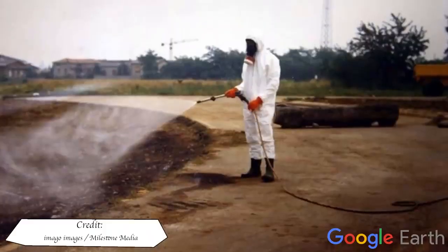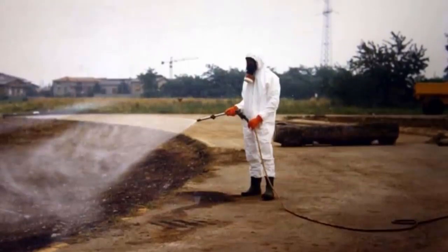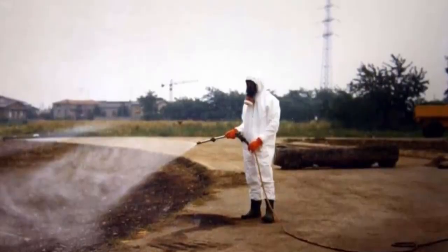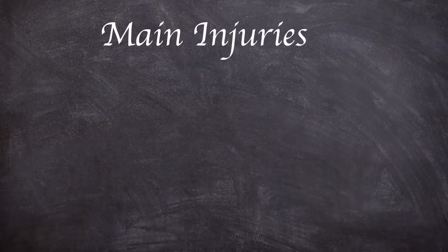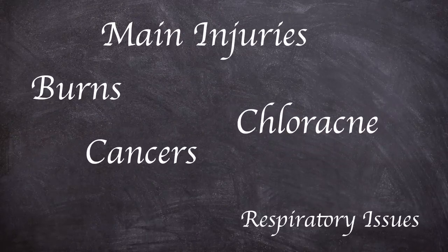Around 2000 hectares of soil was contaminated and over 80,000 animals died either directly or due to the liquidation works. Short-term effects on the human population were primarily burns. However, long-term effects were chloracne, cancers, respiratory issues, and diabetes.